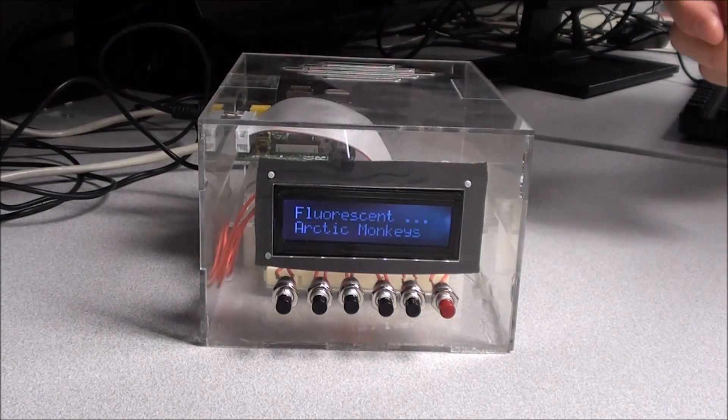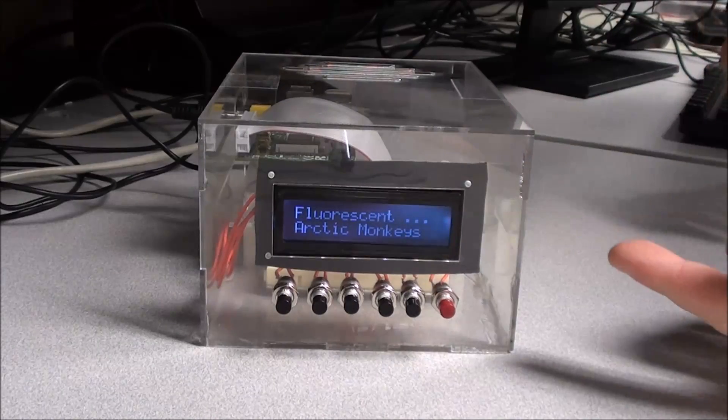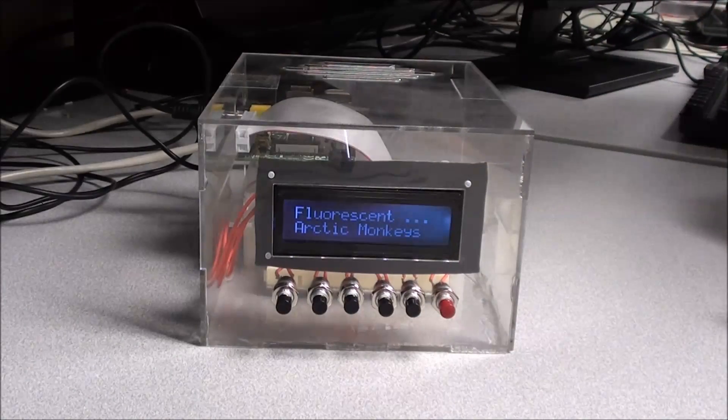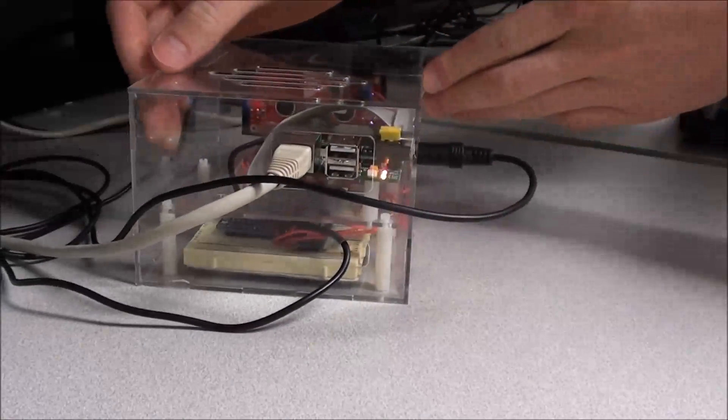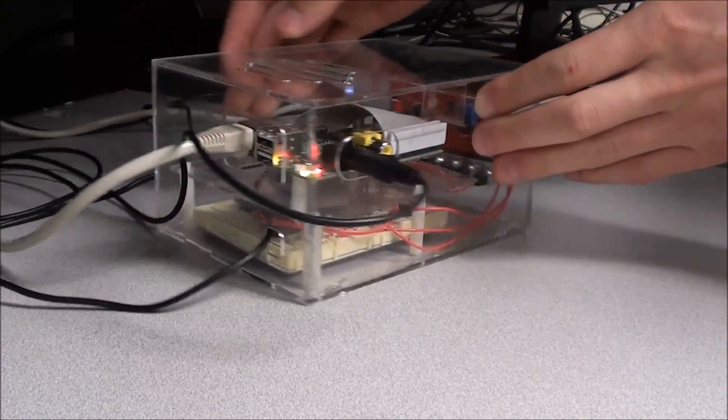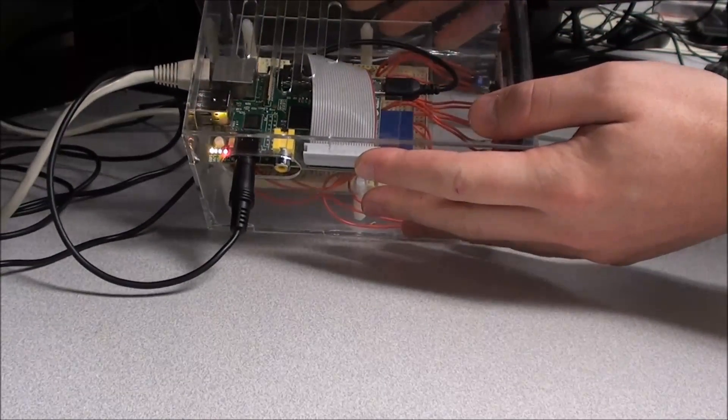First, I want to show off the box itself. On the front, we've got an LCD and six push buttons that can control the music. On the side and back, we have access to all the Raspberry Pi's ports, and we have some venting on top in case it gets a little hot.